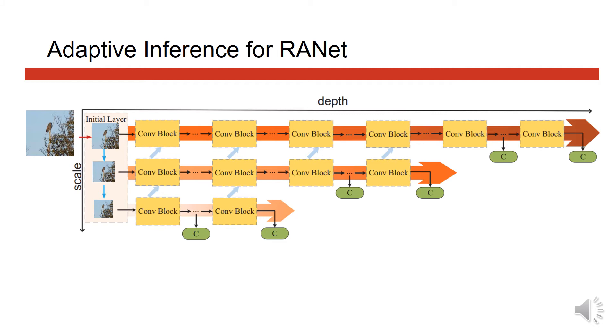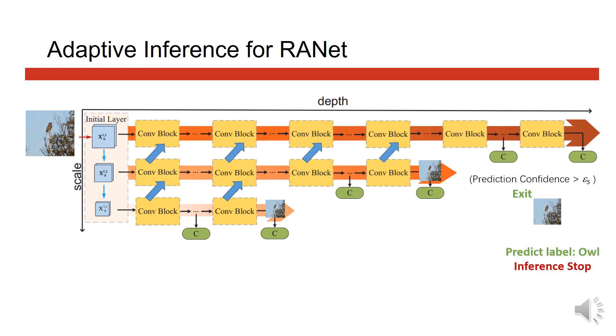The images with unreliable predictions will be further processed by a larger subnet with feature fusion. This procedure is repeated until one subnet yields a confident prediction, or the last subnet is evaluated.